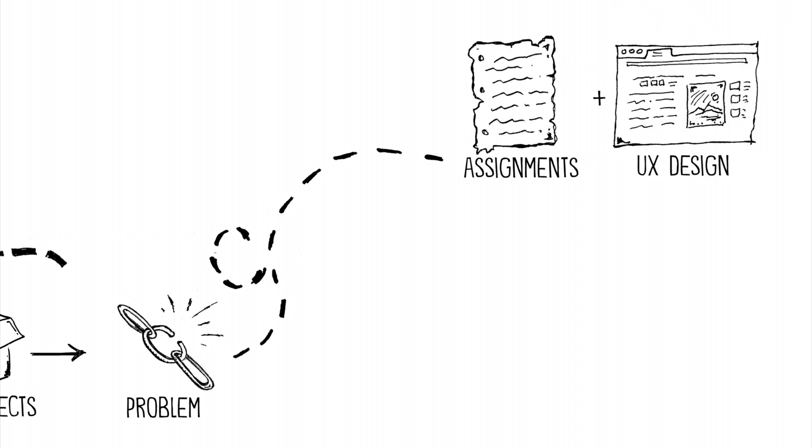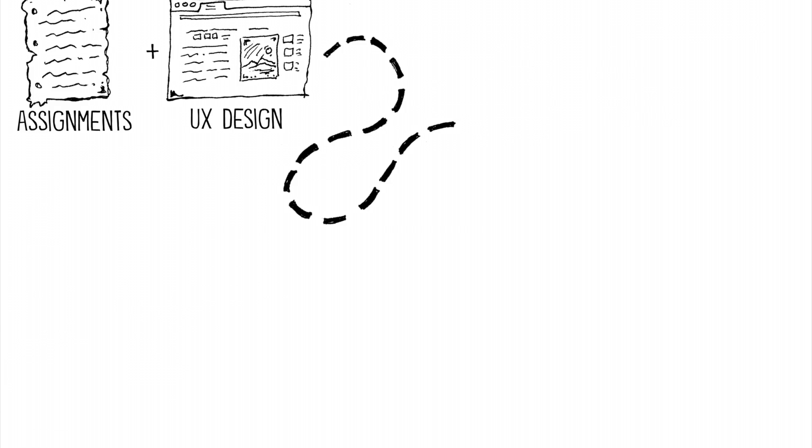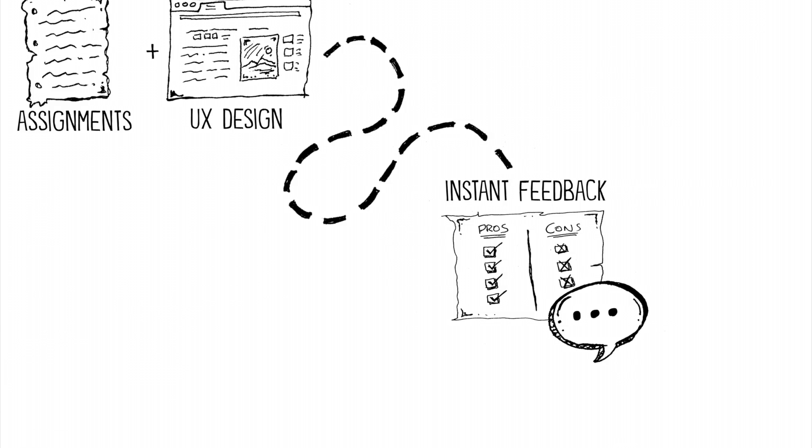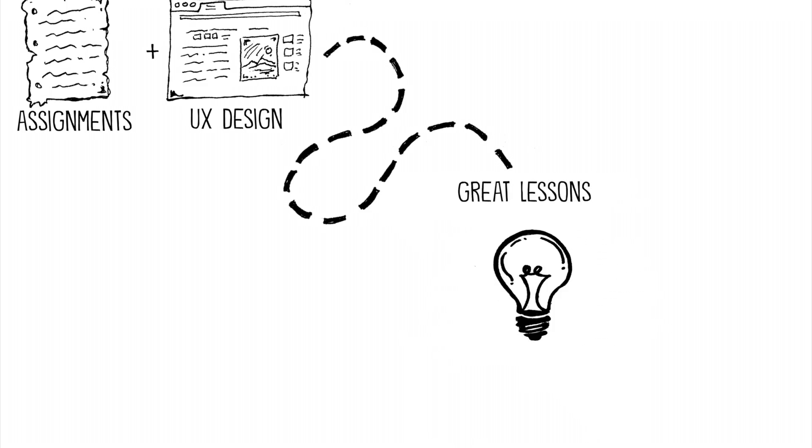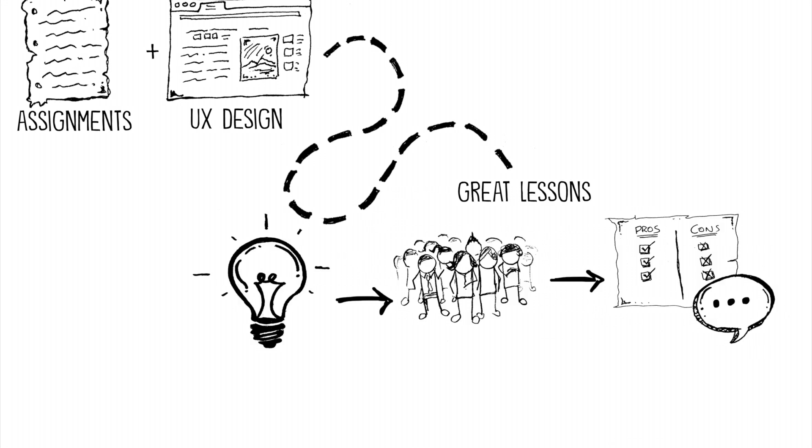Number six: incorporate instant feedback. The best video games provide instant feedback. Players can make adjustments without having to stop their progress, and the same is true of great lessons. Students are able to make sense out of their feedback.